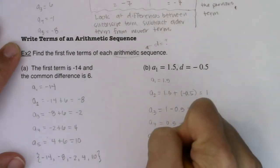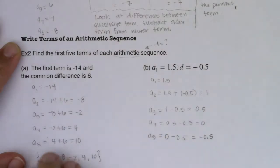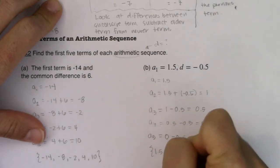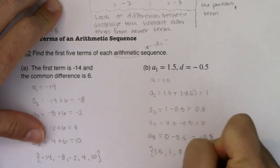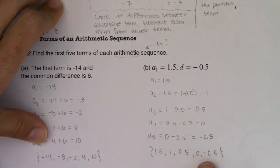And finally, A sub five would be zero minus 0.5, which is negative 0.5. So there are the five terms in my sequence. And I can just write that out with the squiggles. We started at 1.5. And I lost half a unit each time out. And there is my arithmetic sequence.